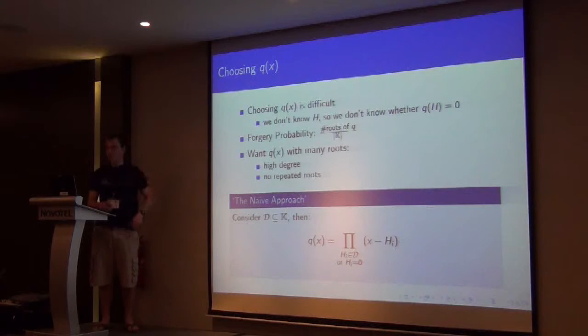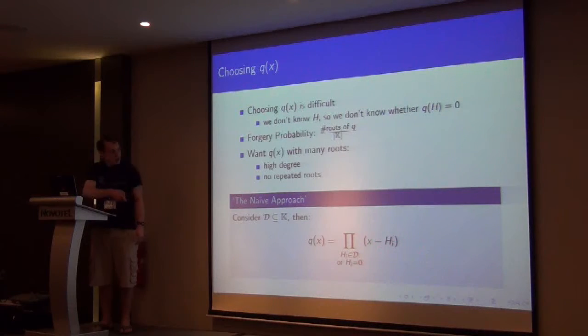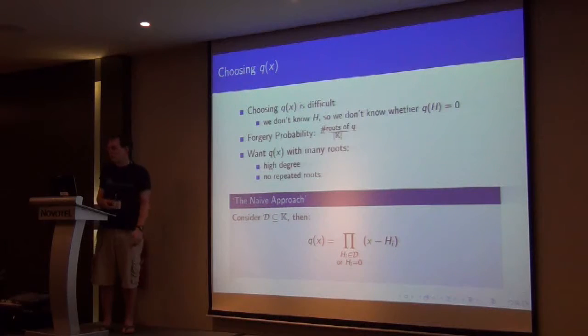So the naive approach is the simple method for writing down q of h is to just pick some subset of the key space. And then multiply together all of these factors down here. And that's going to be 0 if the hash key is in this set. We need to make sure we add in 0 so we're going to get a constant term.